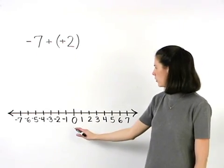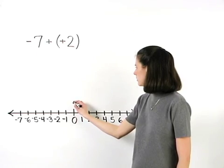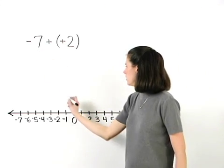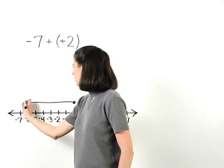So starting at zero on our number line, negative seven moves us seven units to the left.